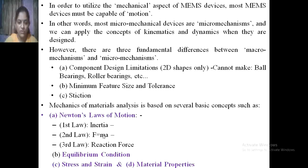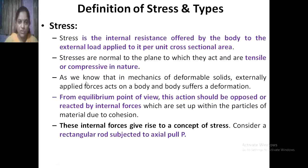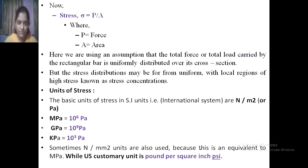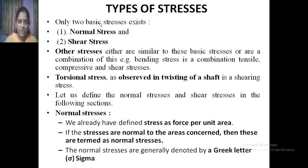For mechanics of materials there are some basic concepts: Newton's laws of motion — first, second, and third — equilibrium conditions, stress and strain, and material properties. Stress is the internal resistance offered by the body to an external load applied per unit cross-sectional area. Stress equals force divided by area (σ = P/A), with units of Newton per metre squared (Pascal), or mega Pascal, giga Pascal, and kilo Pascal.